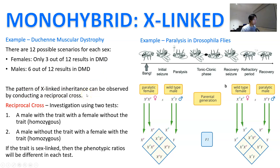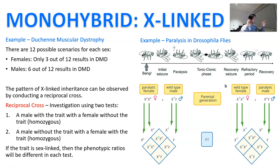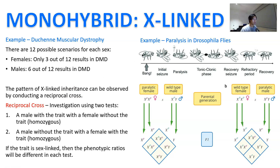The pattern of X-linked inheritance can also be observed by conducting a reciprocal cross. This involves two tests: first, crossing a male with the trait and a female without it; then crossing a male without the trait and a female with it. If the offspring ratios are different between the two tests, it's a sex-linked condition. A good example is paralysis in Drosophila flies — crossing a paralytic female with a normal male gives 100% of males with the condition, but crossing a normal female with a paralytic male results in no individuals with the condition, confirming it is sex-linked.